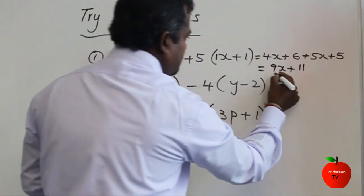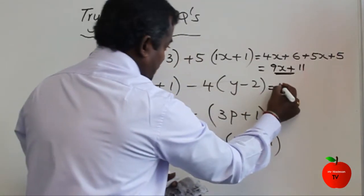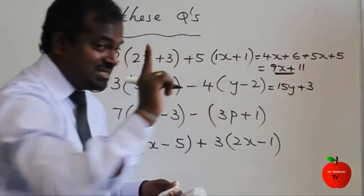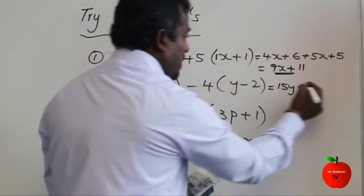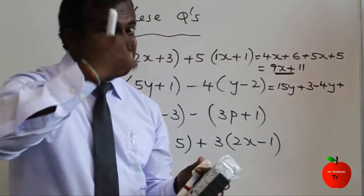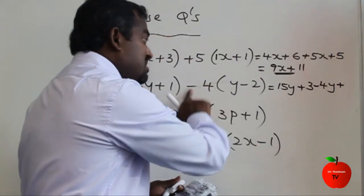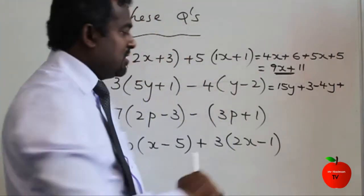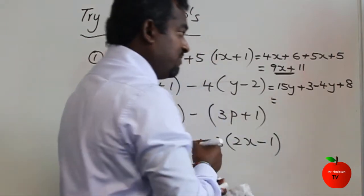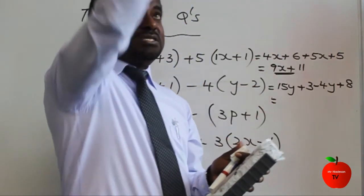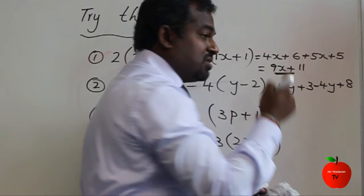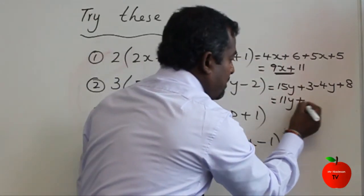Question number 2: 3 times 5y is 15y. Plus 3 times 1 is 3. Minus is dangerous: minus 4 times y is minus 4y. Minus into minus comes to plus: 4 times 2 comes to 8. Now simplify: 15y — going up 15 steps. Minus 4y means coming down. Still up — how many steps? 11y. Plus 3, going up 3 steps. Plus 8 again. So that comes to plus 11.